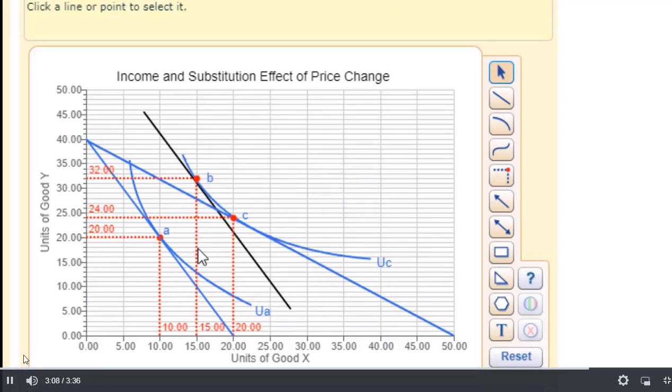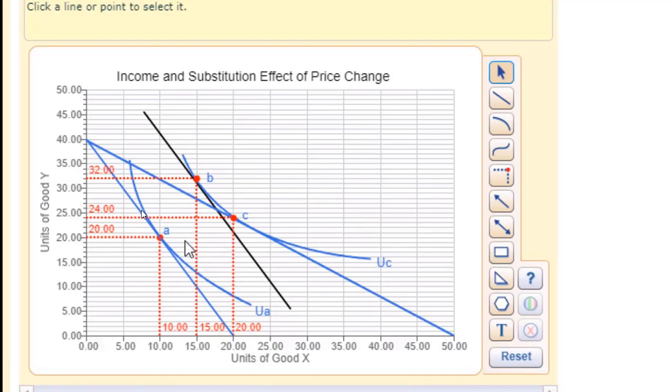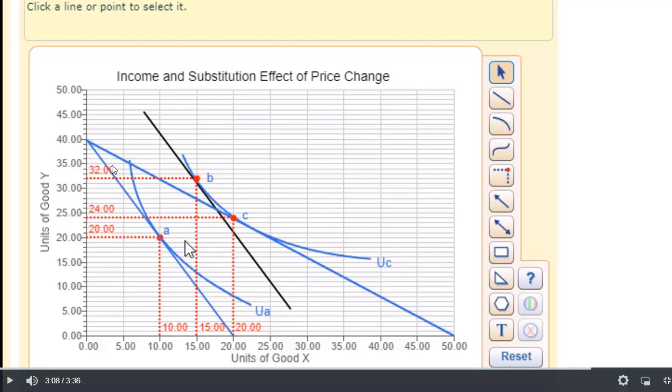So this movement then from A to B represents the income effect. So when we lower the price of a good it is going to increase real income or purchasing power, allowing the consumer to buy more goods. And so basically holding prices constant. And that's what we're doing here when keeping the slope of the budget line unchanged as we just do a parallel shift out. We are holding the prices constant, just seeing the effect of an increase in real income. And that is going to be this movement from A to B. So the real income effect here, or the income effect here of the price change, is it allows the consumer to buy five more units of the good, going from 10 to 15.